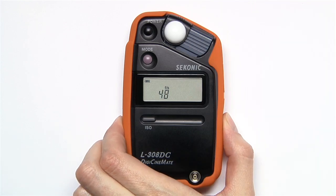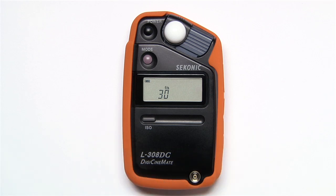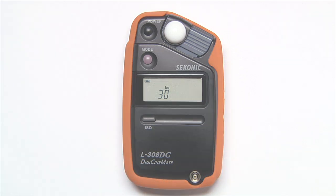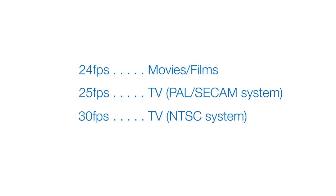Press the up or down button to set the desired frame rate. 24 frames per second is a standard rate for movies. 25 frames per second and 30 frames per second is used for motion captured for TV viewing.